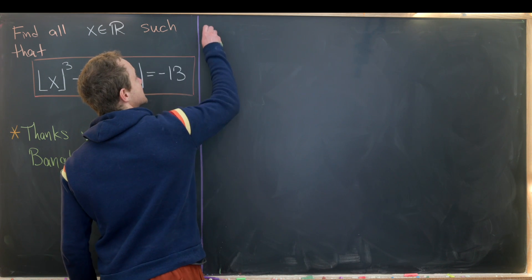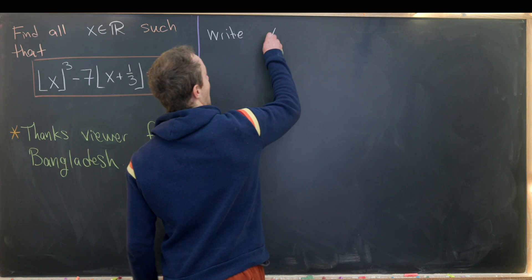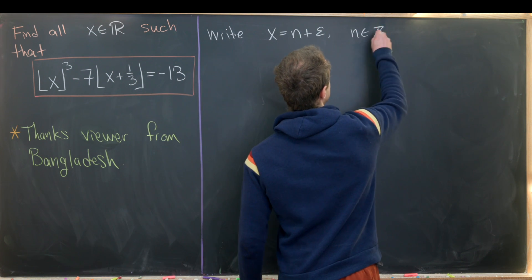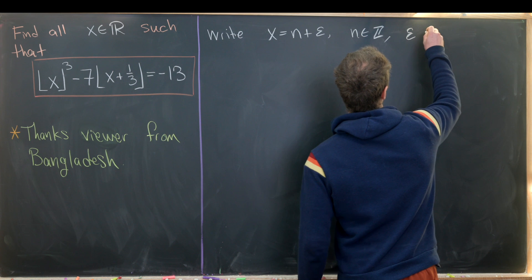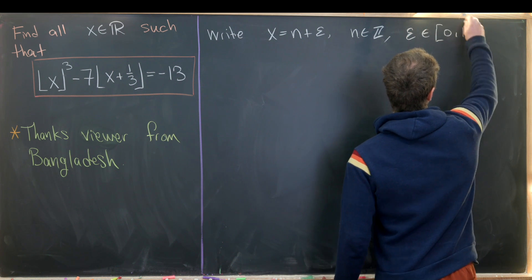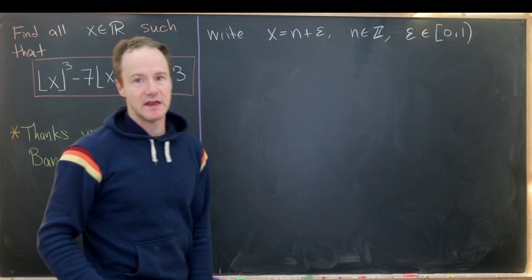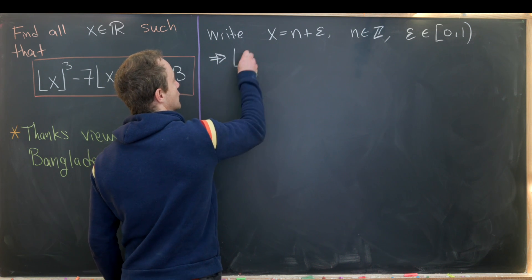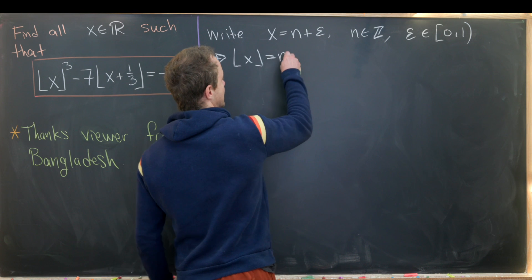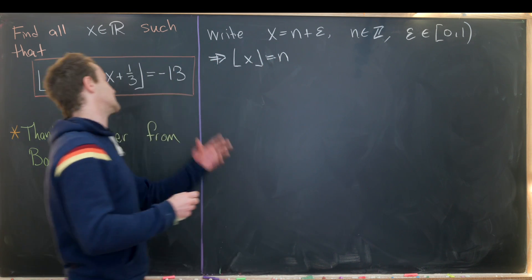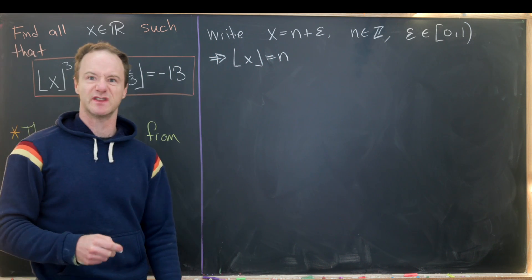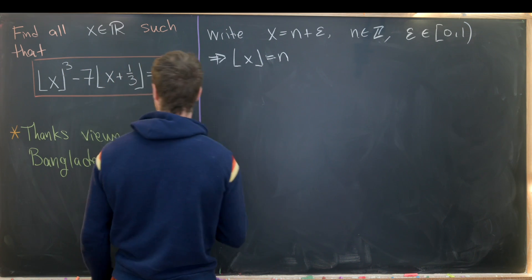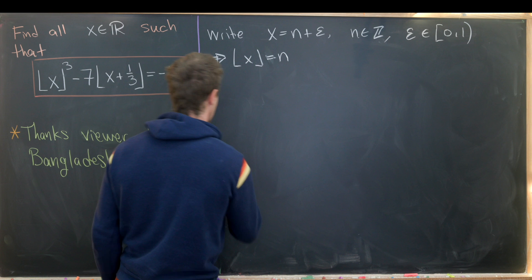So let's start by writing x as n plus epsilon, where n is an integer, and then epsilon will be a real number between 0 and 1, including 0 but not including 1. Notice that tells us that the floor of x is equal to n. So we can hopefully write this as an equation without the floor function that just involves integers. And like I alluded to before, this is going to naturally break into two cases based off of this x plus third.